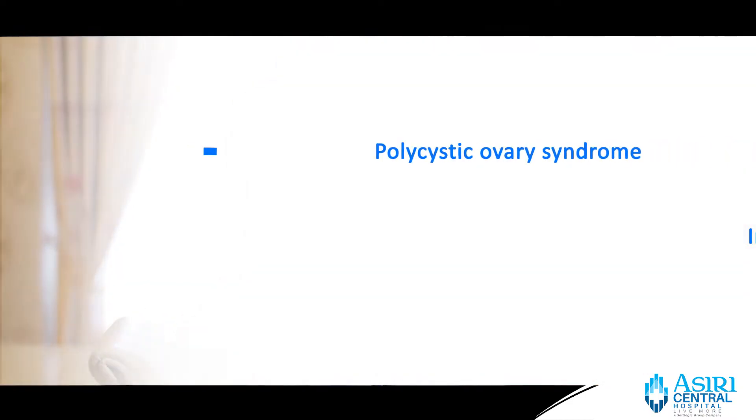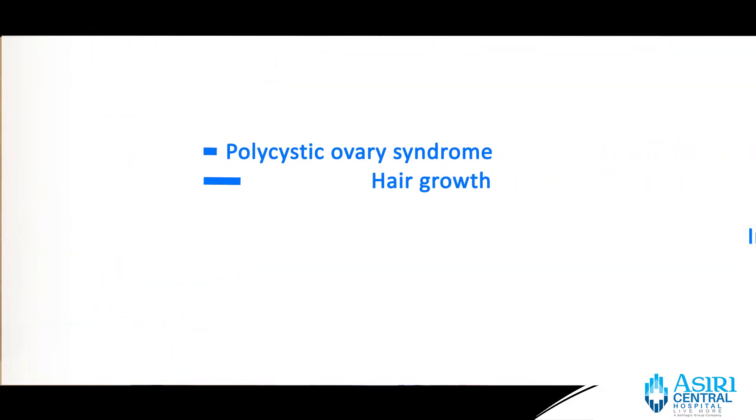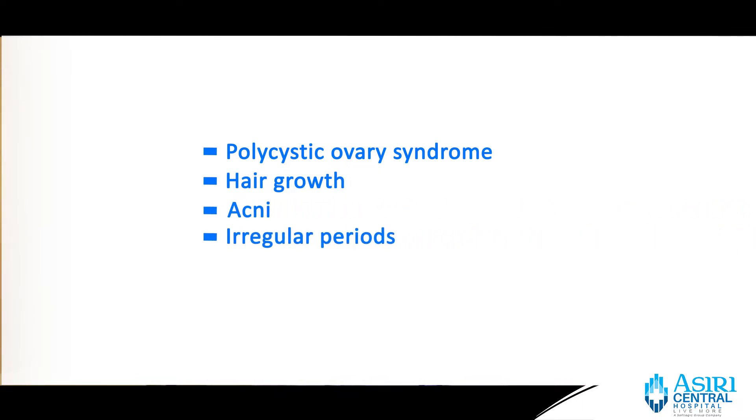It's no wonder that somebody with insulin resistance or diabetes has subfertility and has menstrual problems. In men, there are sexual or sperm production problems. To be specific, women will have menstrual issues like polycystic ovary syndrome, hair growth, acne, and irregular periods.